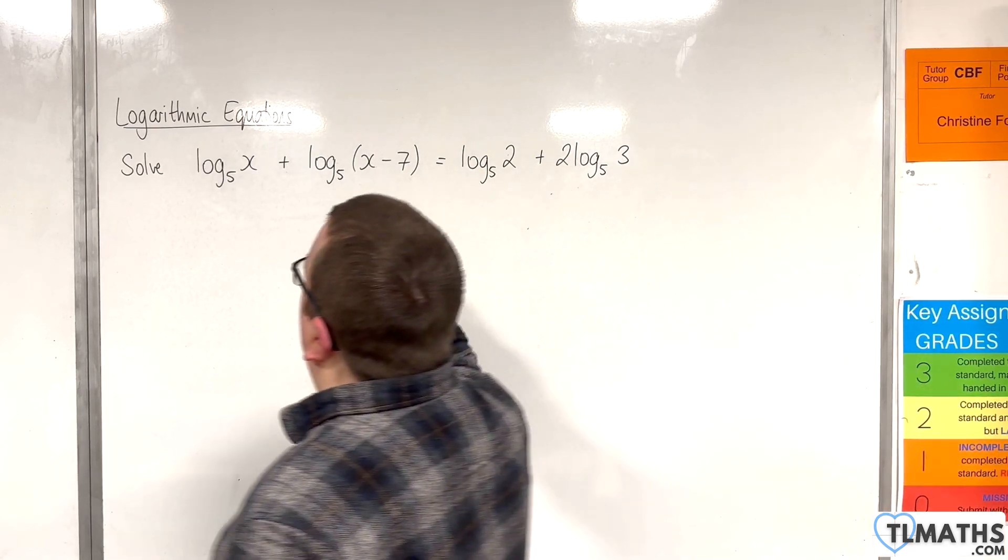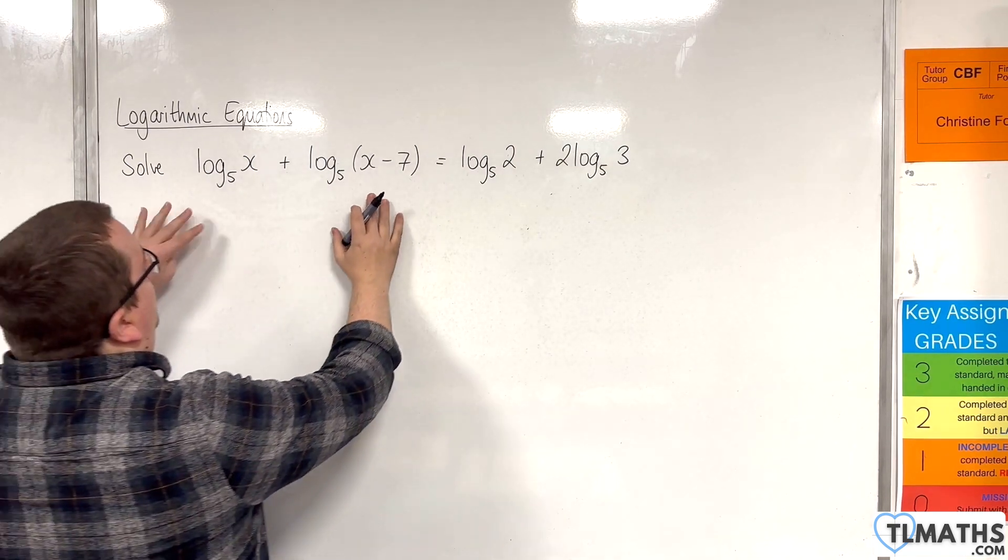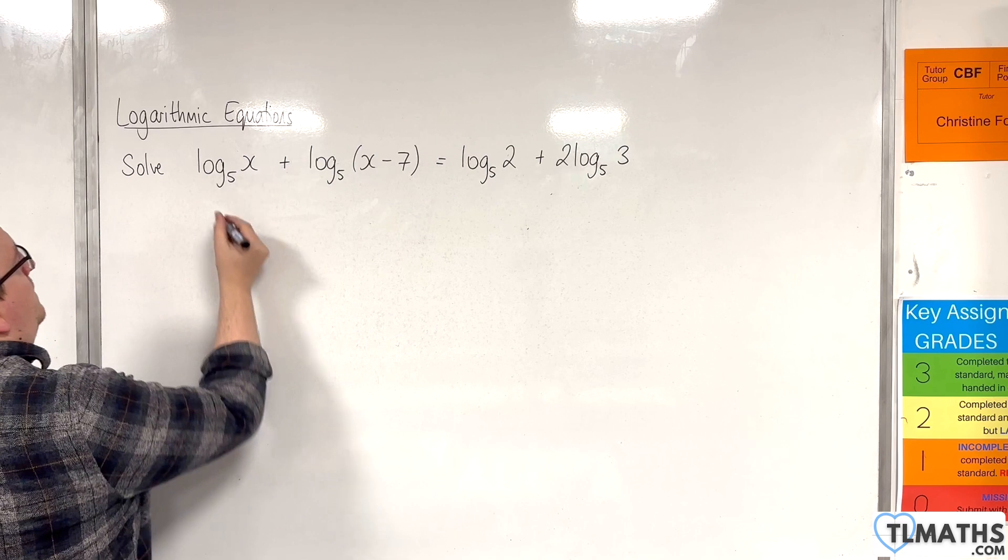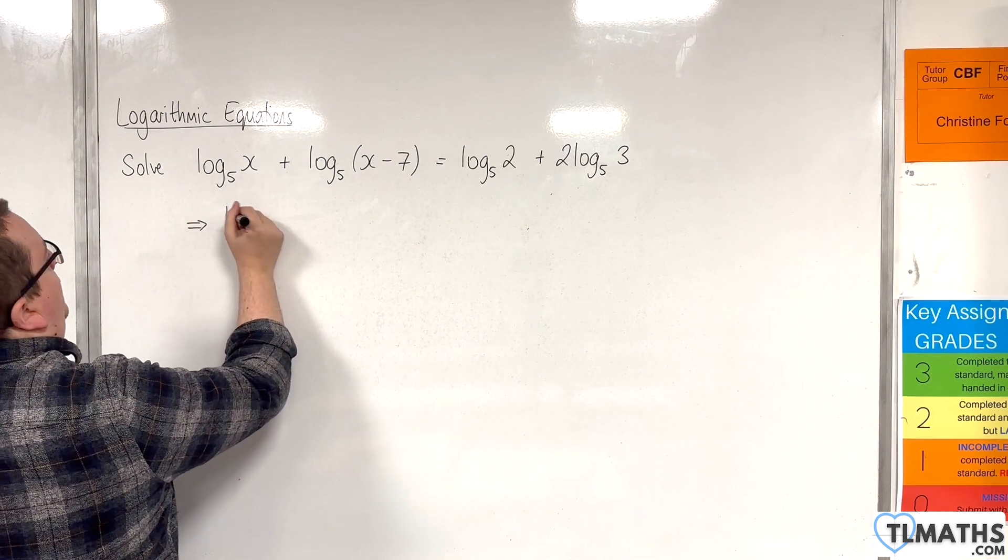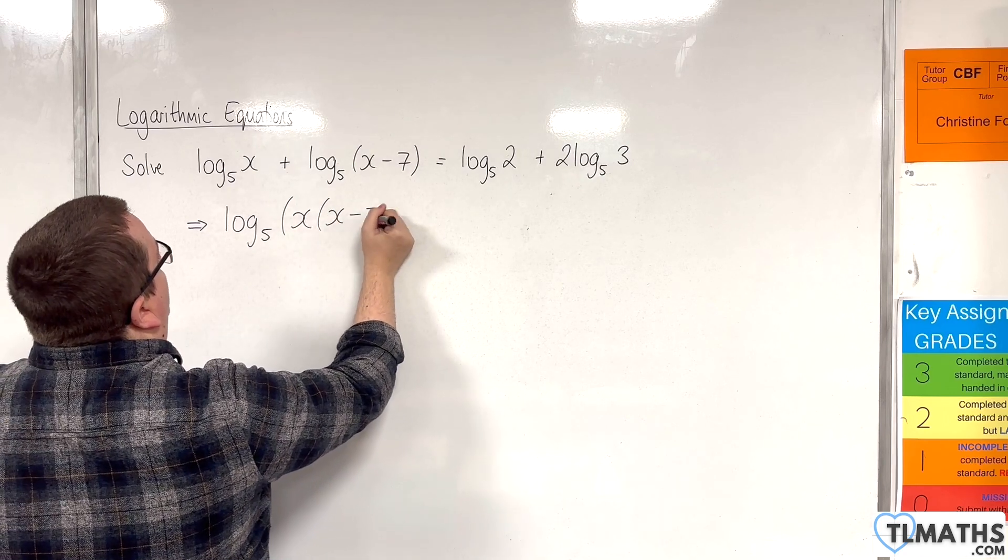Let's focus our attention on the left hand side. Five is the base of both those logarithms so we can use the product rule to bring them together. We can write that as log base 5 of x times (x - 7).